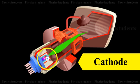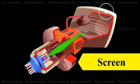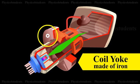It is the cathode. This is an airtight glass body of the tube. You can see a screen. This is a coil yoke made of iron.